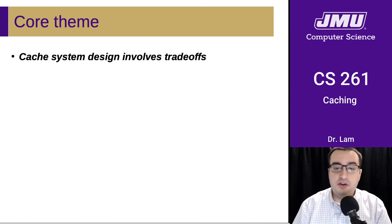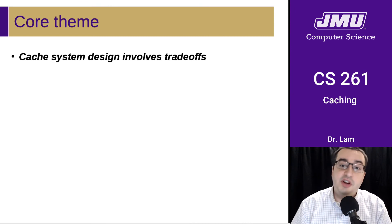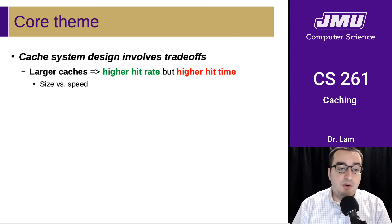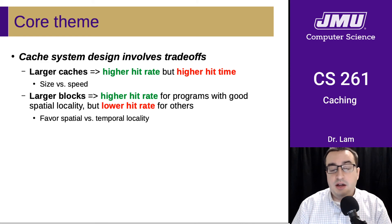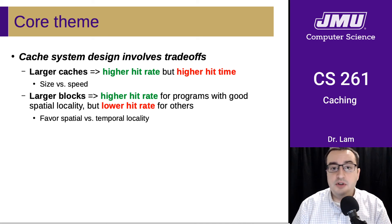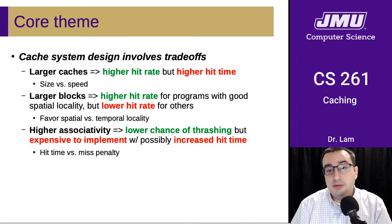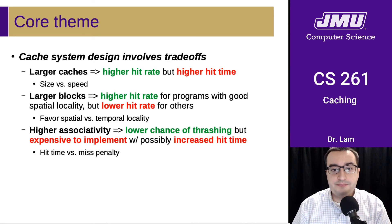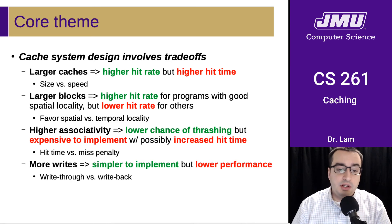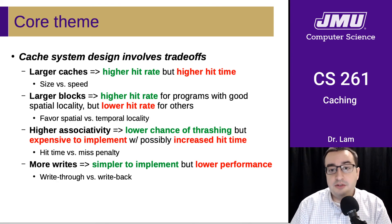Back to core themes: cache design involves trade-offs. Larger caches lead to a higher hit rate but also a higher hit time. Caches with larger blocks give a higher hit rate for programs with good spatial locality, but a lower hit rate for other programs. Higher associativity gives a lower chance of thrashing since you store more lines per set, but it's more expensive to implement in hardware and could increase hit time. And doing more writes immediately is simpler to implement but could give lower performance compared to buffering them and writing later.